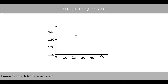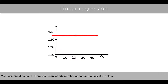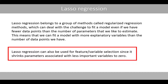However, if we only have one data point, we can only estimate the intercept, because one data point is not enough to say anything about the relationship between two variables. With just one data point, there can be an infinite number of possible values of the slope. LASSO Regression belongs to a group of methods called regularization regression methods, which can deal with this challenge and fit a model even if we have fewer data points than the number of parameters we'd like to estimate. This means we can fit the model with more explanatory variables than the number of data points. LASSO regression can also be used for feature or variable selection, since it shrinks parameters associated with less important variables to zero.